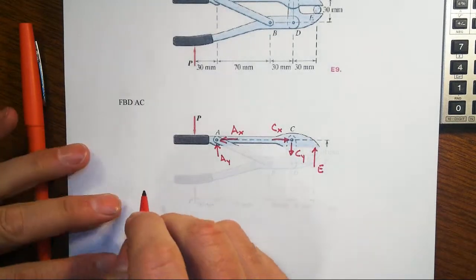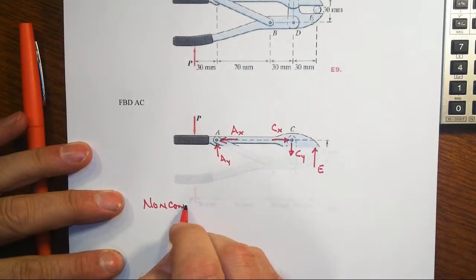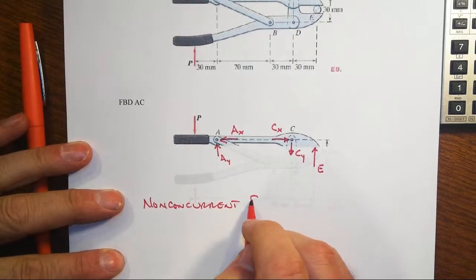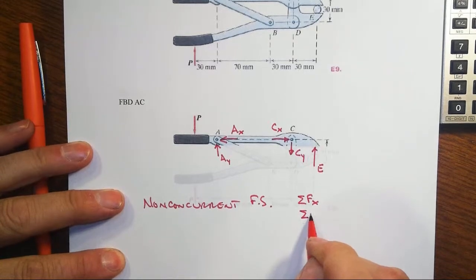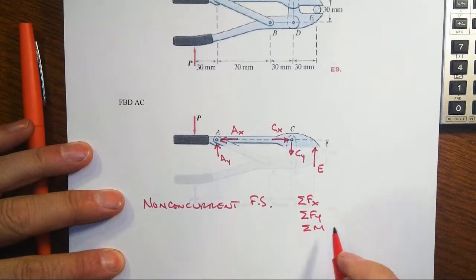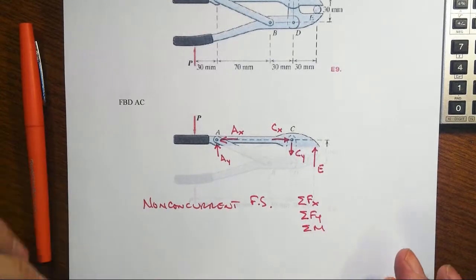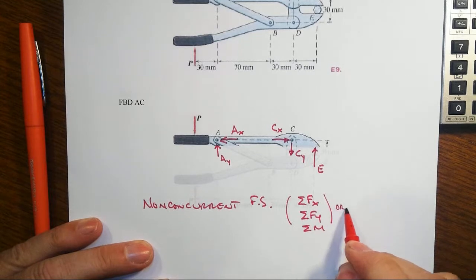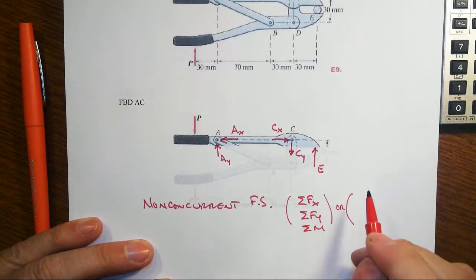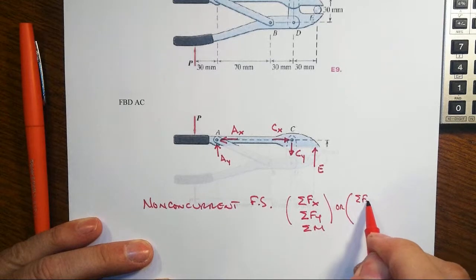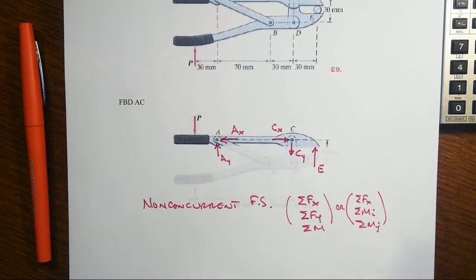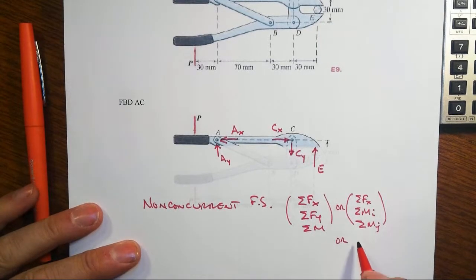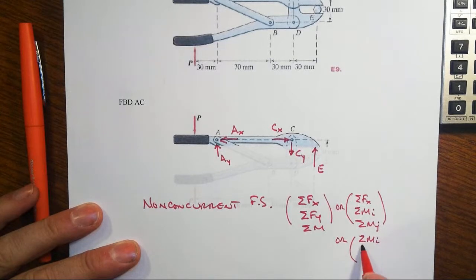That is a non-concurrent force system. And that means that we have three independent equations of equilibrium that might be represented as sum of forces of the x, sum of forces of the y, and sum of moments about a point. Now in a system like this, it's probably far more likely that we'd actually look at a different set of independent equations of equilibrium. That might be sum of forces in the x, sum of moments about one point, and sum of moments about another point. We could also do sum of moments about three different points.